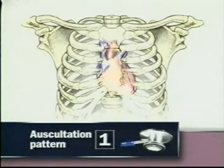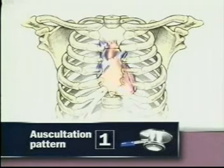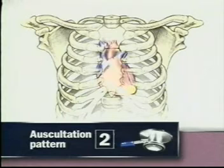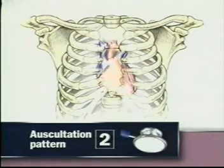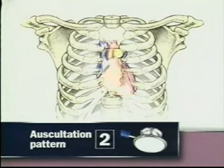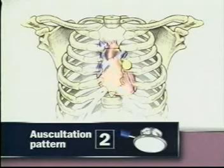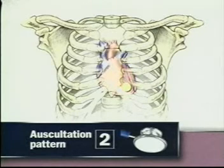Starting in the right second interspace helps orient you to the cardiac cycle. In the second sequence, start with the bell and listen first at the mitral and tricuspid areas. Then change to the diaphragm and, starting in the aortic area, listen to all five areas from above down. Starting at the mitral area is useful when you've had to turn the patient to find the apical impulse.